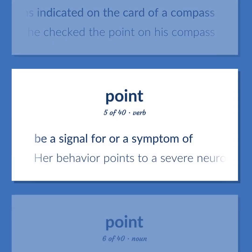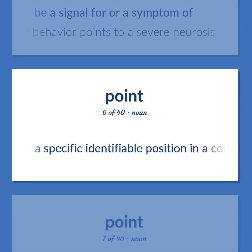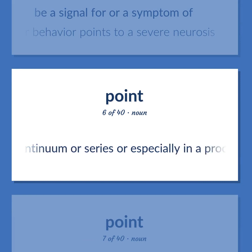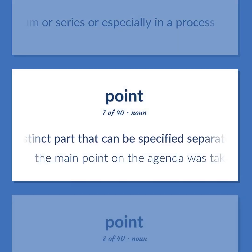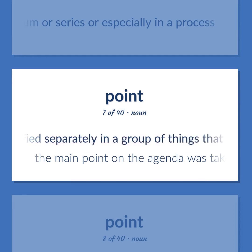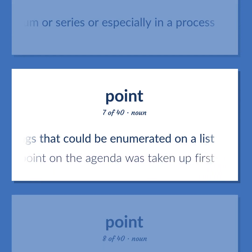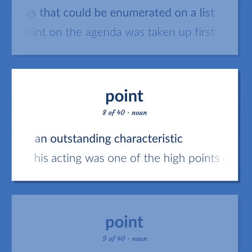Point: Be a signal for or a symptom of. Example: Her behavior points to a severe neurosis. A specific identifiable position in a continuum or series, especially in a process. A distinct part that can be specified separately in a group of things that could be enumerated on a list. Example: The main point on the agenda was taken up first. An outstanding characteristic. Example: His acting was one of the high points of the movie.